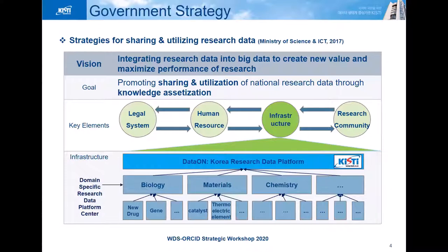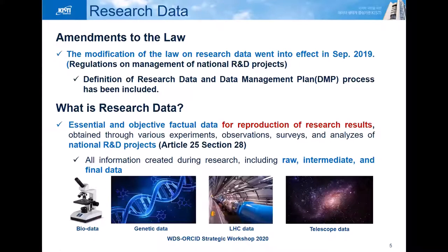Regarding the infrastructure, the national research data platform is hierarchically linked with specialized centers in each field — so-called domain-specific research data platform centers. In September 2019, amendments to the law took effect. The law defines research data as the essential and objective factual data for reproduction of research results obtained through various experiments, observations, surveys, and analysis of national R&D projects. This definition limits its target to national R&D projects and emphasizes the reproducibility of research results.